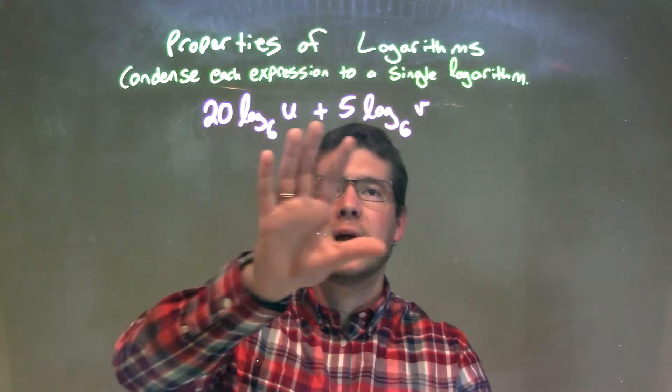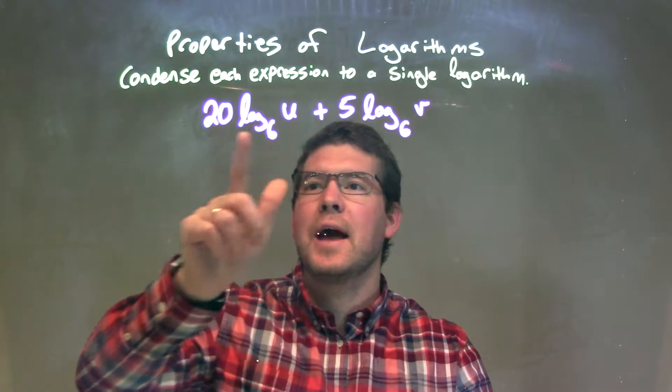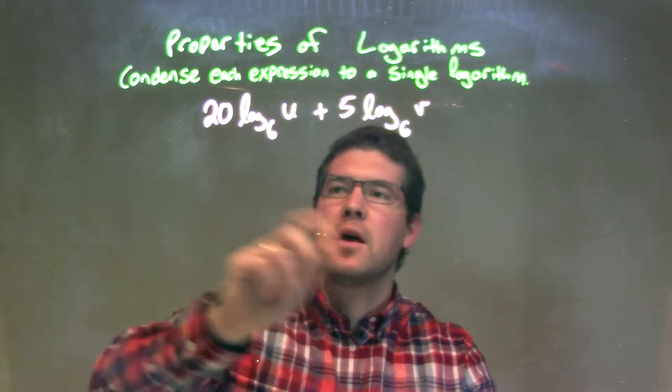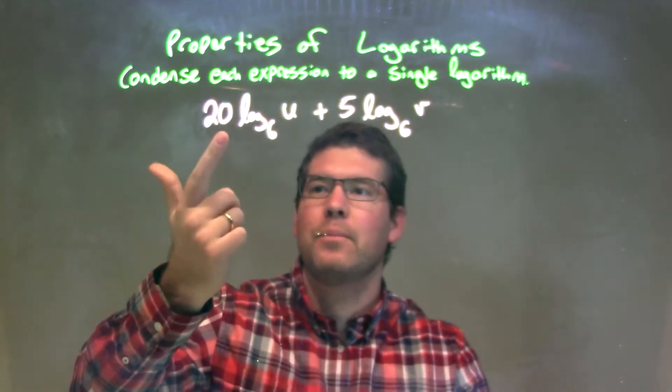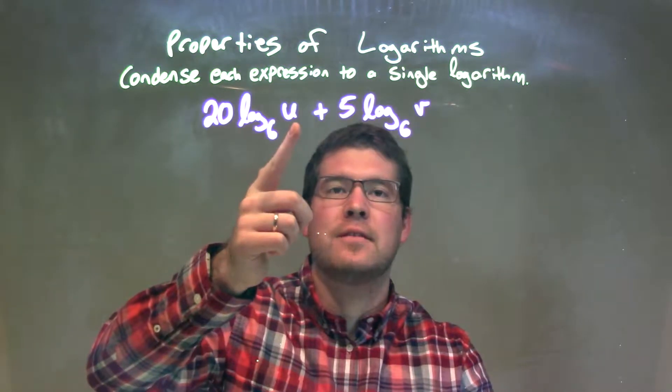Well, from there, when I want to condense this, I'm looking at in front of each one of these log base 6s, we have a number. That number can become the exponent of the variable inside the logarithm.